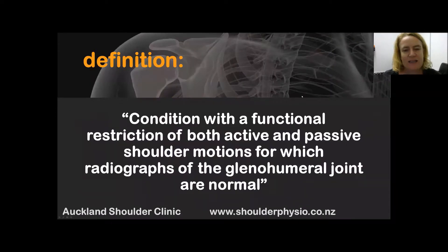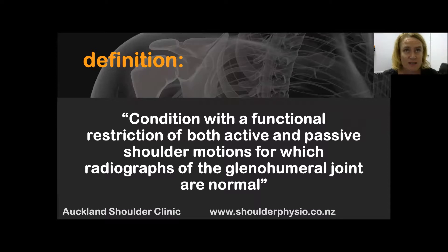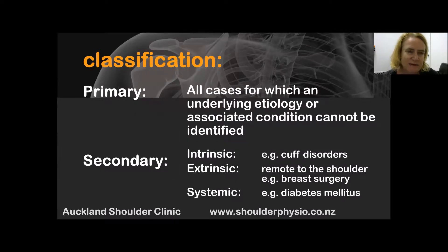Starting with the definition of frozen shoulder: a frozen shoulder is a condition which has a functional restriction of both active and passive shoulder motion, for which x-rays of that joint are normal. This essentially means that you can move your shoulder and someone else can move your shoulder to around the same amount of movement — the same degrees of range of motion.